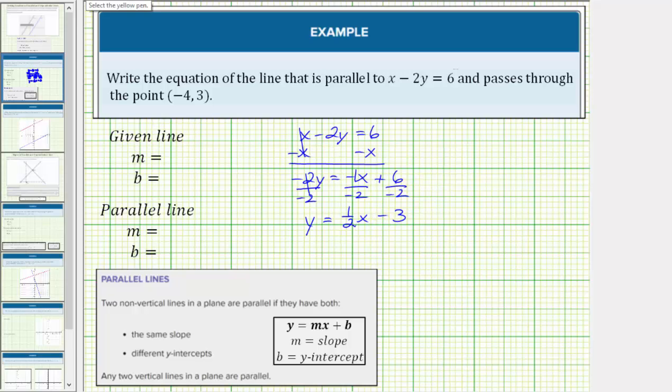So this is the equation of the given line in slope-intercept form. Notice how the given line has a slope of 1/2 and a y-intercept of -3. Now because we're looking for a line that's parallel to this line, we know the slope of the parallel line must also be 1/2.